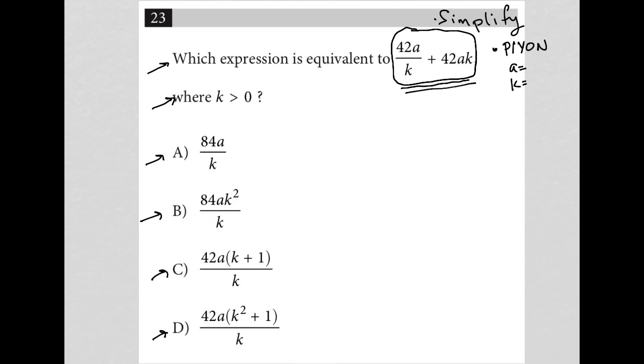So in terms of simplification, I have 42a over k plus, I'm going to call this 42ak over 1, just to make them both fractions. And then in order to add fractions, I have to have a common denominator, which means I'd have to multiply this right fraction by k over k to make it have a denominator as k like the first fraction does.